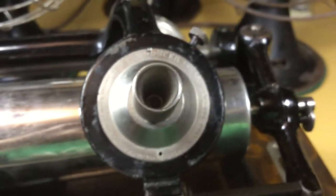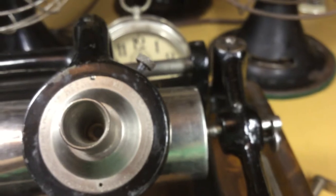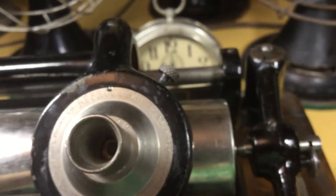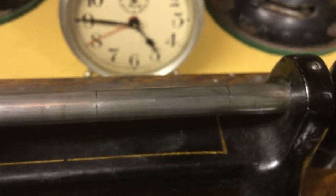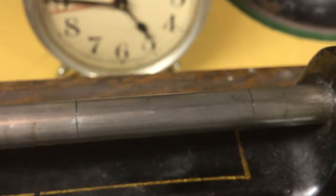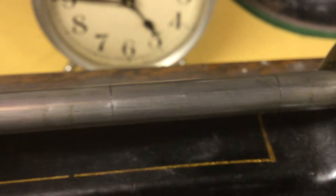Let's see how fast it's running now. On these machines there are marks that you can use for timing the speed of the machine. They are one and six tenths of an inch apart, see there.